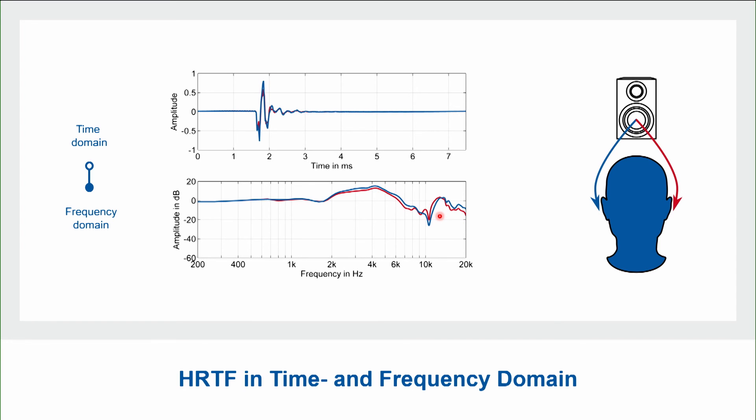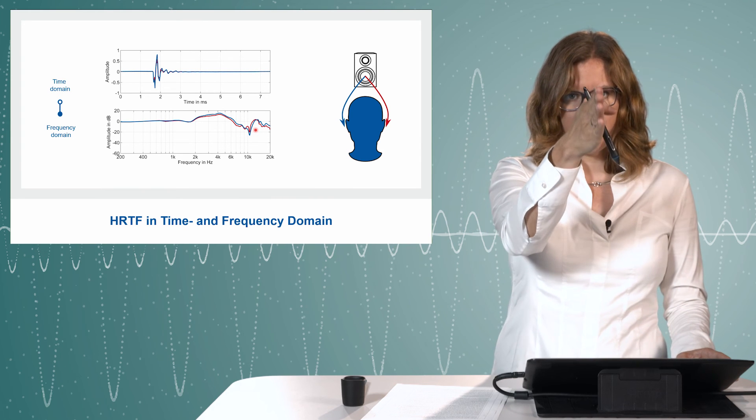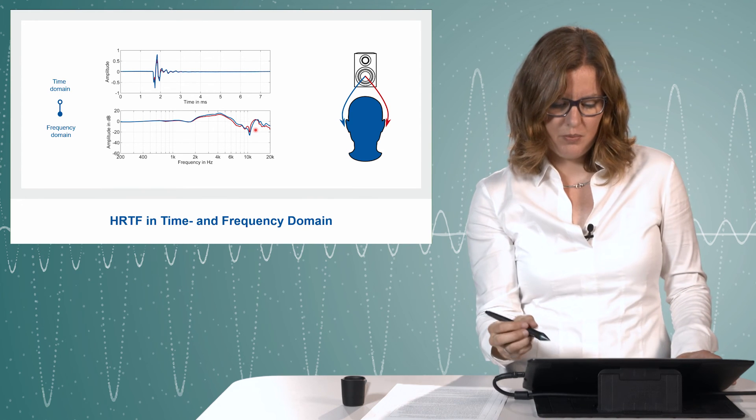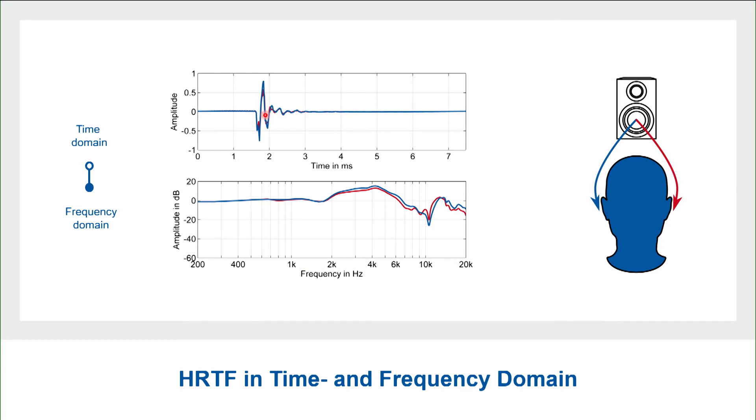But now we move the sound source to the frontal direction. So the sound source is now placed in the median plane right in front of me. What you can see here is that we have almost no time difference between the left and the right ear, and we have almost no level difference between the left and right ear signal. It would be completely the same if our head would be completely symmetric, but this is not the case in real life.